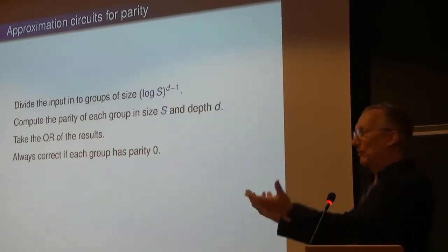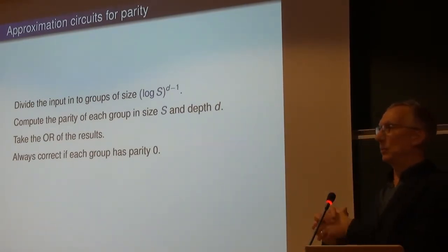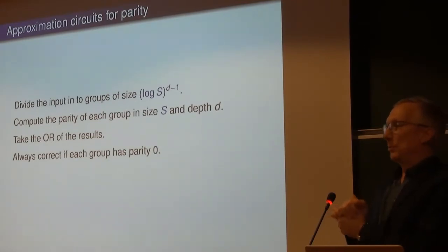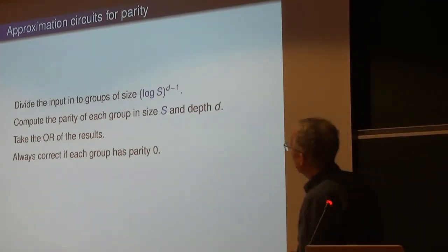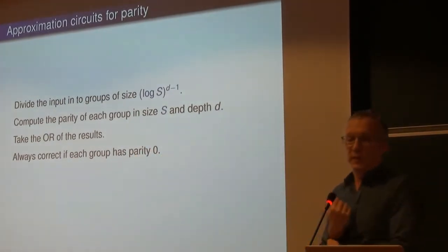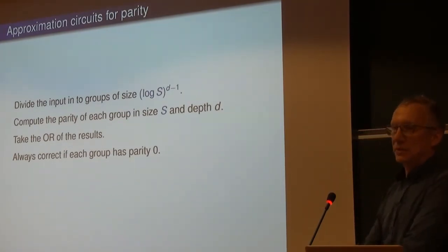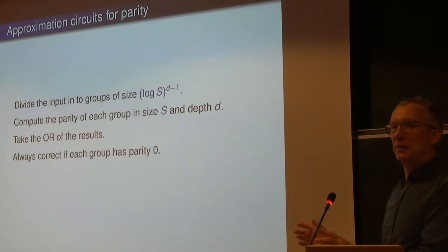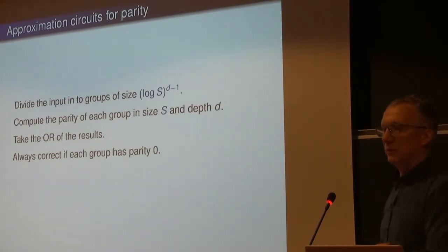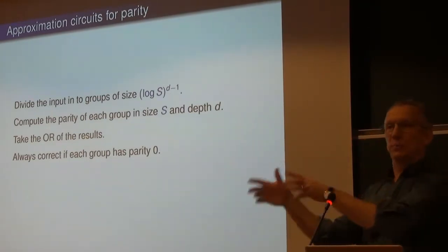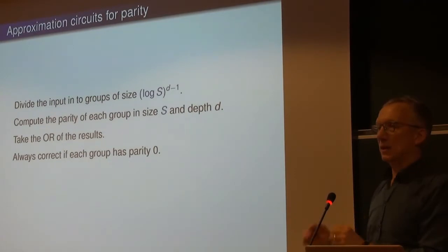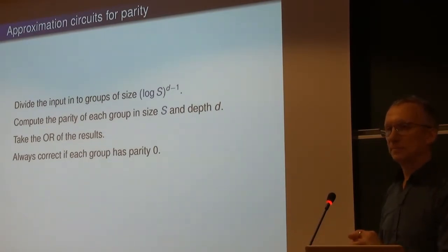To convey the algorithmic intuition: we have a budget of size S. In size S and depth D you can compute the parity of log(S)^(D-1) variables. You divide your big group into chunks of this size, compute the parity of each group, then take the OR of results. If all group parities are zero then the OR is zero and we're correct — in all other cases it's roughly 50/50, giving a tiny advantage over random. And that tiny advantage is the best you can do — that's what the theorem says.